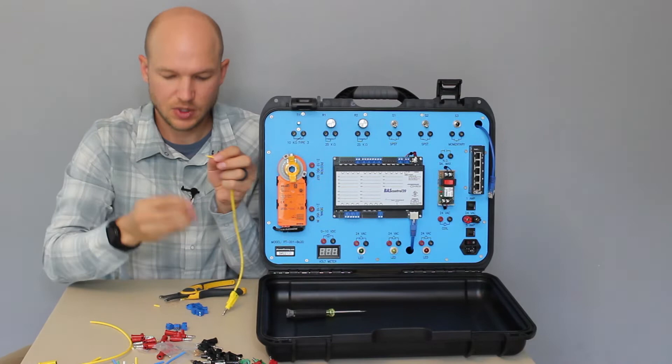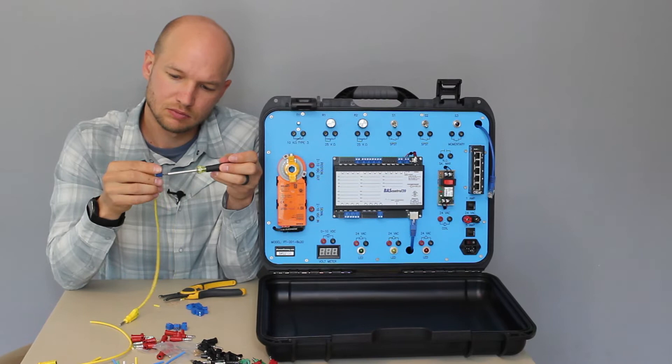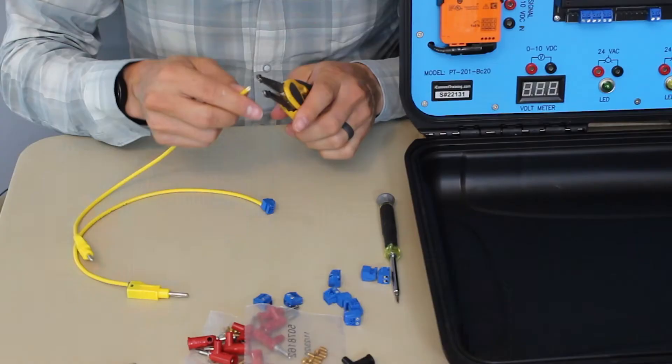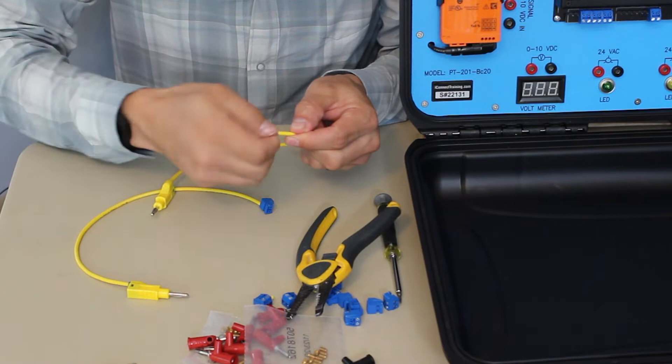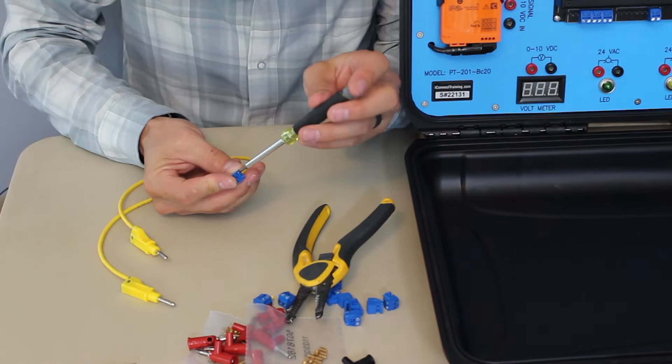So we're going to take one of our leads and strip roughly an eighth inch, maybe a quarter inch, to go into the connector. We're going to twist the wire, get it a little bit tighter, put it into the connector and then tighten it. So I'll zoom in so you can see that a little bit closer. So again, we're going to strip roughly an eighth inch off, tighten the wire by twisting it, putting it into the connector and tightening.